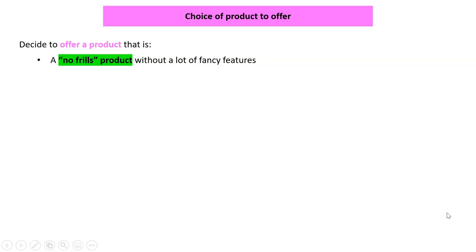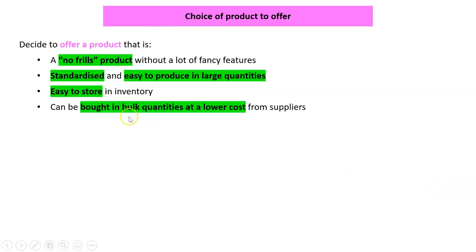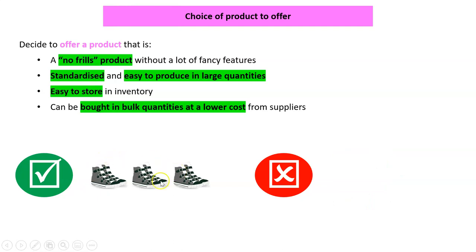How else can you implement this strategy? Think about the choice of product you offer. Offer a product that's no frills — it doesn't have a lot of fancy features, because fancy features are expensive. The product should be standardized and easy to make in large quantities — identical with every unit. We're just going to sell black sneakers, whereas another business might sell black, orange, and blue sneakers. We keep it simple and standardized.